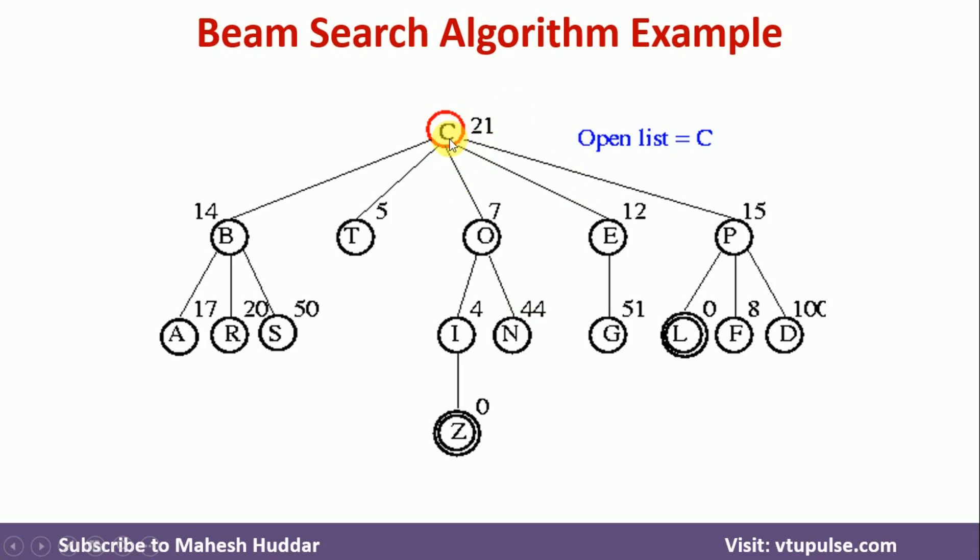So I will start with the initial node, C will be placed into open list first. Now the successors of C are B, T, O, E and P here. Now out of these five successors, T and O are having the minimum distance, or you can say the minimum estimated distance, that is 5 and 7. So we will put these two on open list in this case.